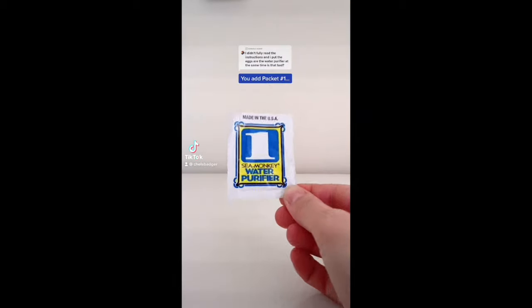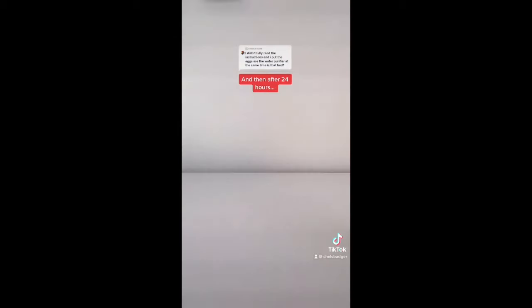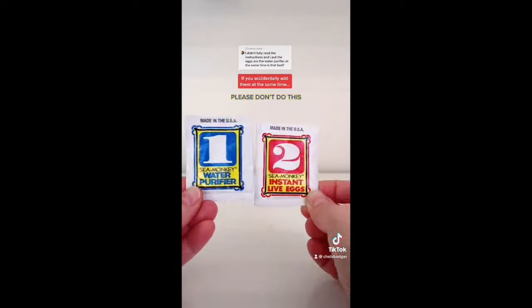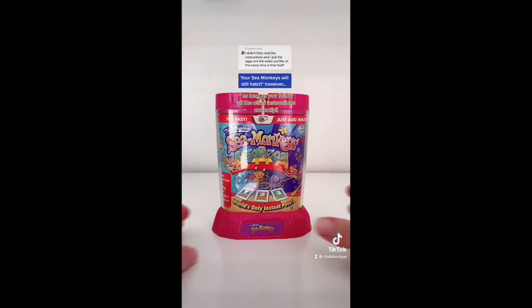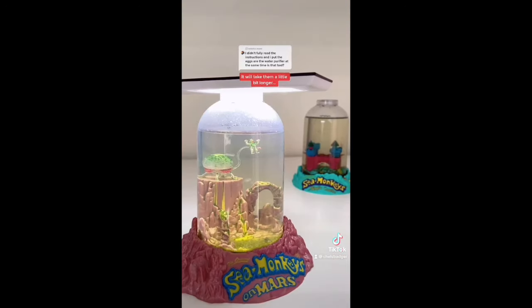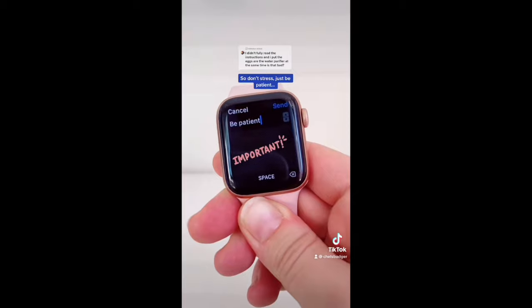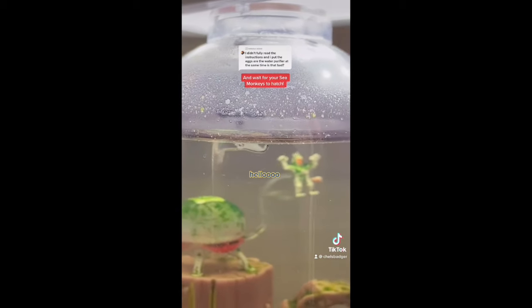When you start a sea monkey tank you add packet number one and then after 24 hours you add packet number two. If you accidentally add them at the same time your sea monkeys will still hatch. However, it will take them a little bit longer. So don't stress, just be patient and wait for your sea monkeys to hatch.